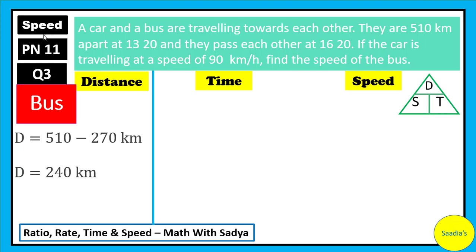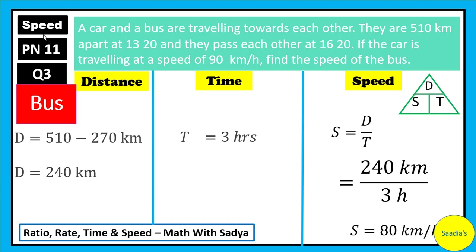The time taken by the bus is the same as taken by the car which is 3 hours. Now, we have distance and time and we can find the speed. We know speed is equal to distance divided by time. Substitute the values of distance and time. And voila! We got the speed which is 80 km per hour, which was what we were required to find. The speed of the bus is 80 km per hour.